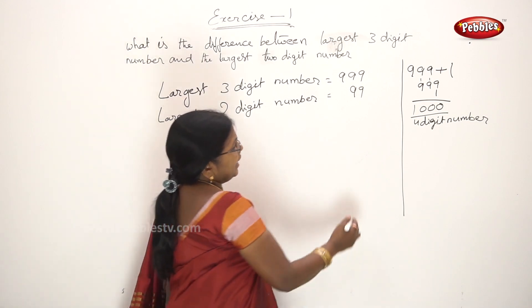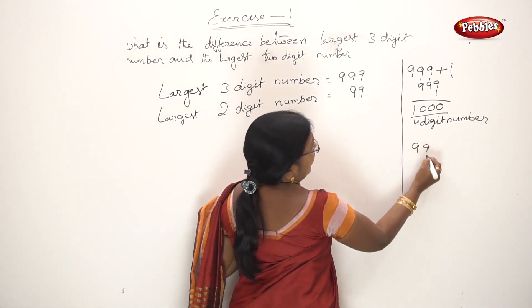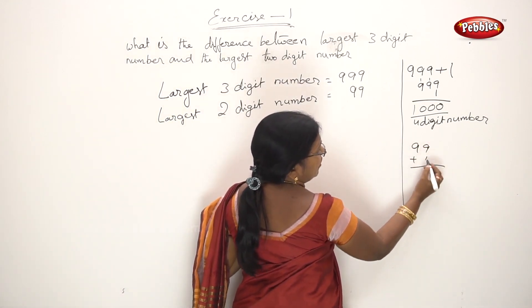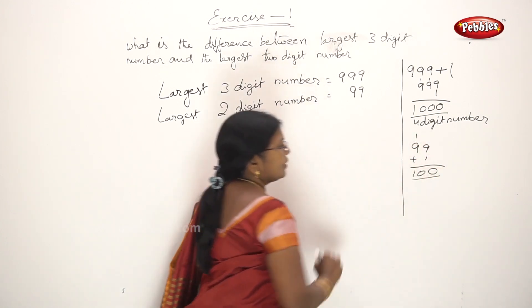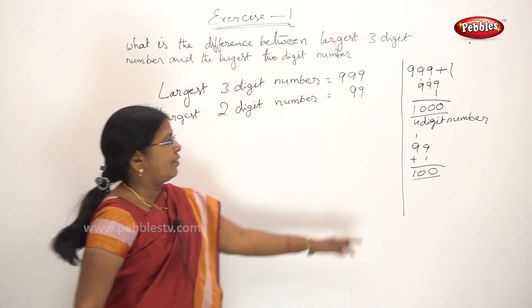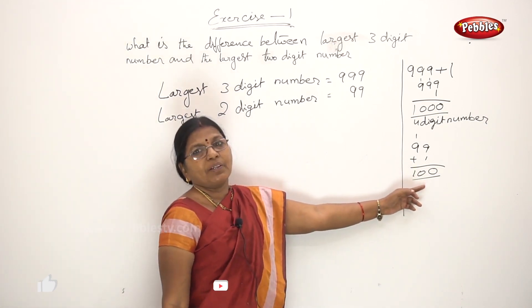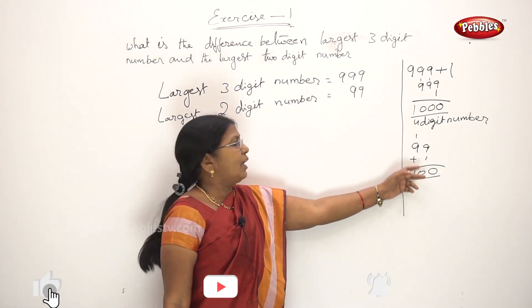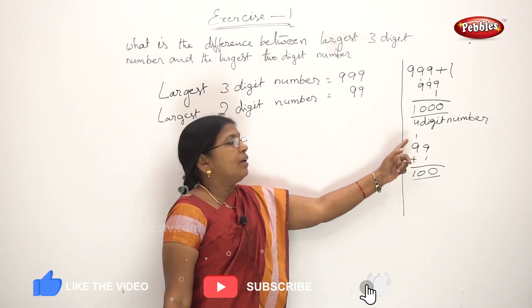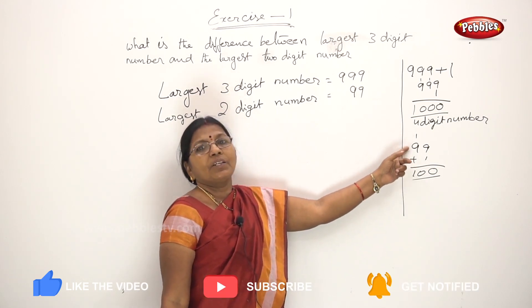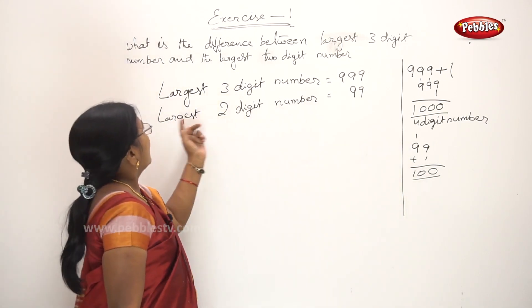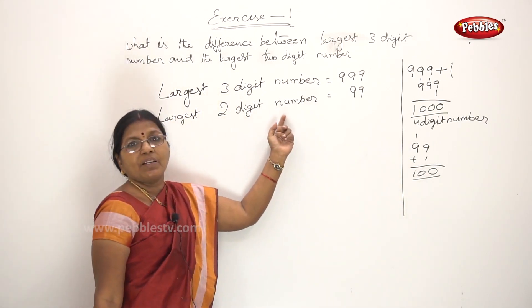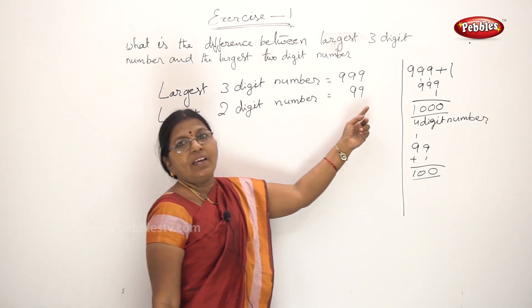99 plus 1: 1 plus 9 = 10, carry, 1 plus 9 = 10. That gives 100, which is a 3-digit number. That means 99 is the largest 2-digit number.